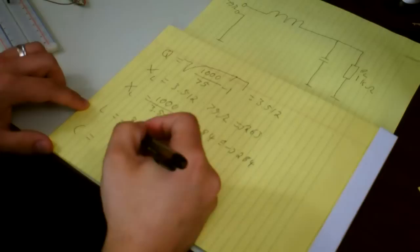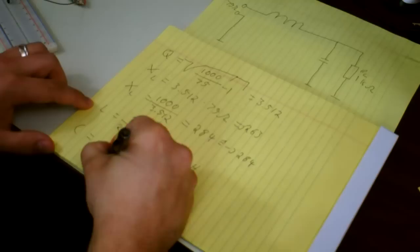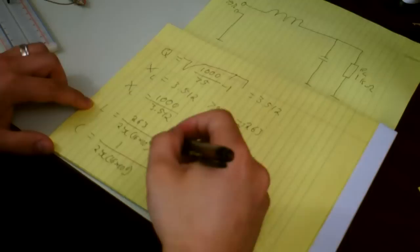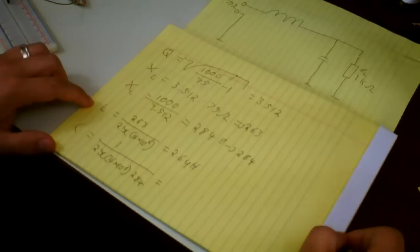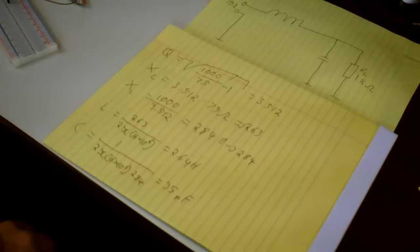For the capacitor, it goes the other way around: C equals 1 divided by 2π times frequency times impedance, where the impedance is 284. That equals roughly 35 picofarads. And that's how you get the component values.